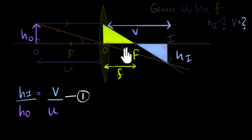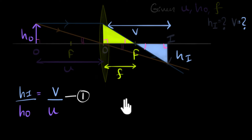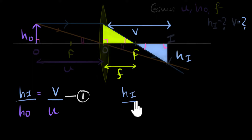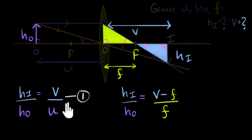If you look carefully, you will find these are similar triangles. Again one angle is 90 degrees, they are both equal to each other. Then you have these vertically opposite angles which are also equal, which means the third angle must also be the same. So we can write a similar equation: HI divided by HO equals (V minus F) divided by F. That is equation number two.